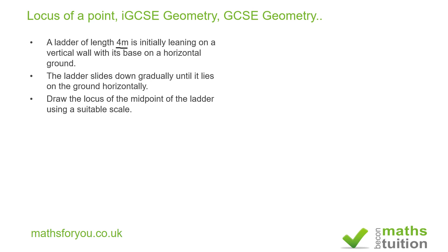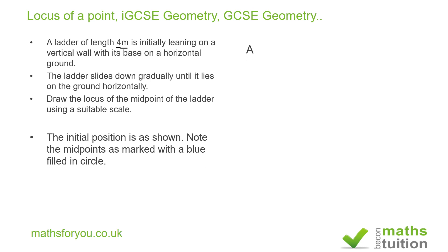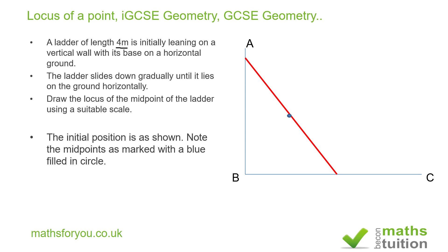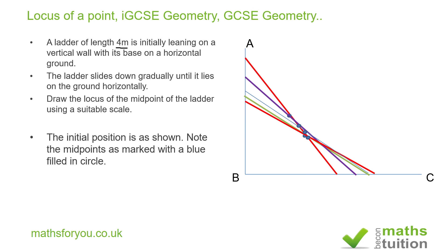My initial position is here — I've got my vertical wall AB and my horizontal ground BC. That's the ladder's first position. Then I'm going to slide the ladder down gradually. I can already see a pattern forming — it looks like a curve.